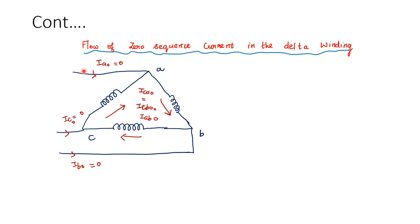The currents Ia0, Ic0, Ib0, and the three zero sequence currents Ica0, Icb0, Iab0 can flow inside the loop of the delta winding but cannot flow outside.